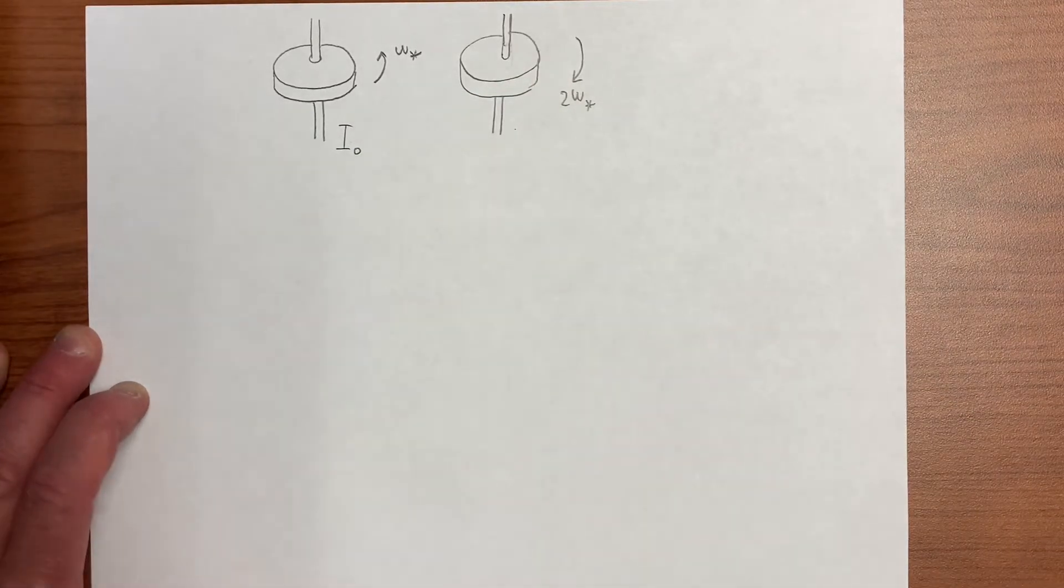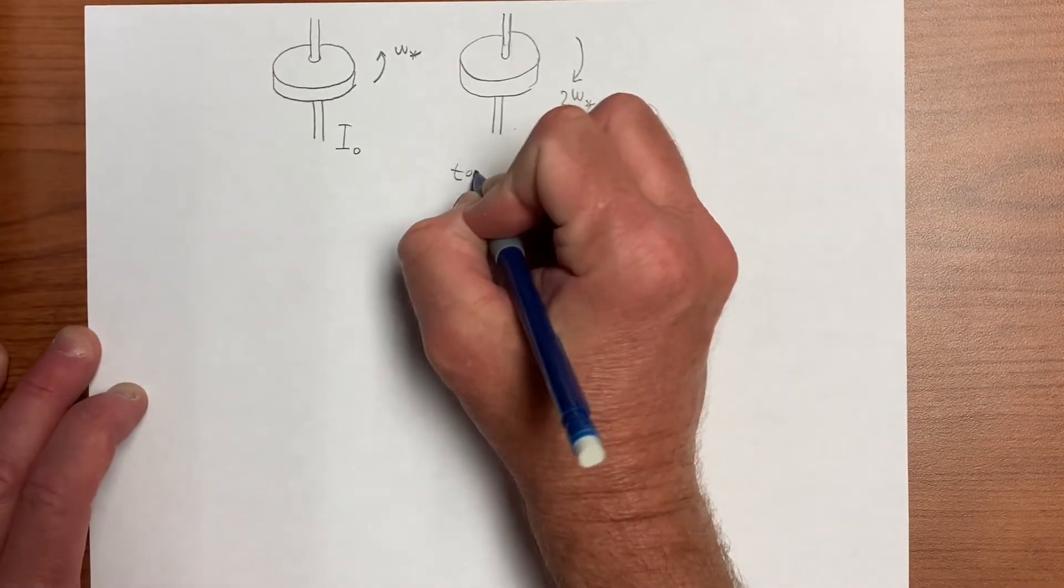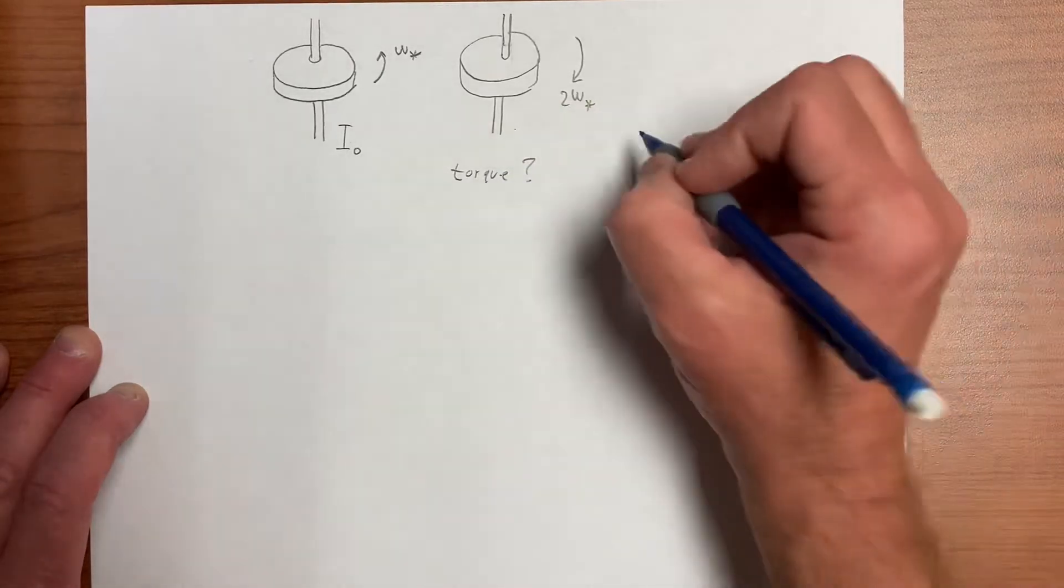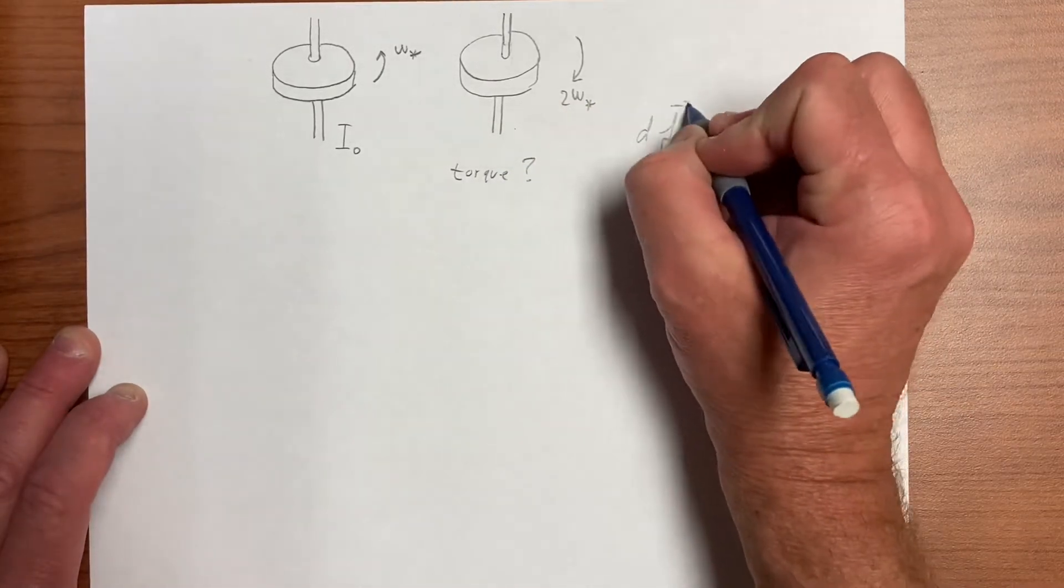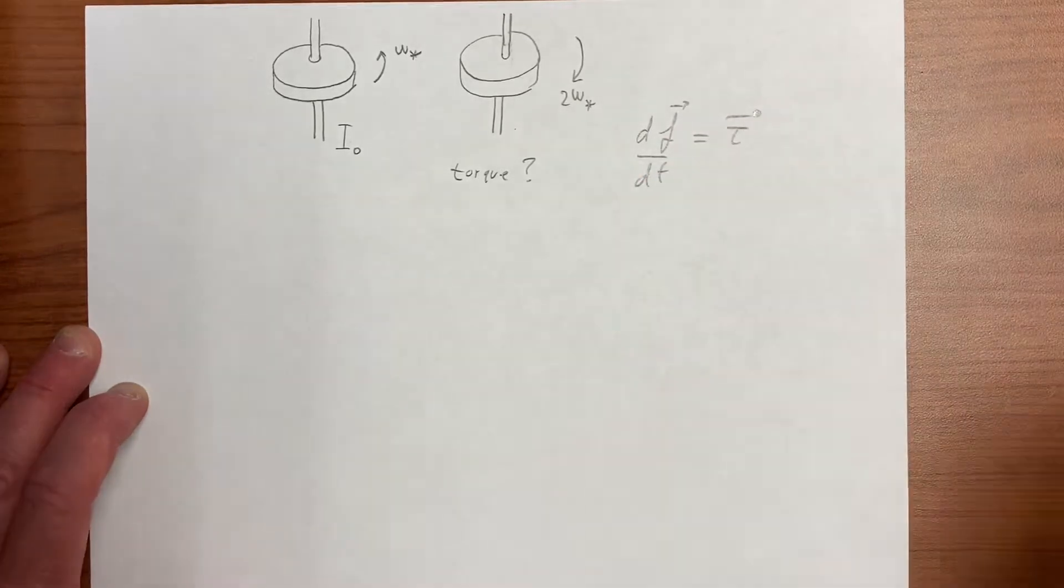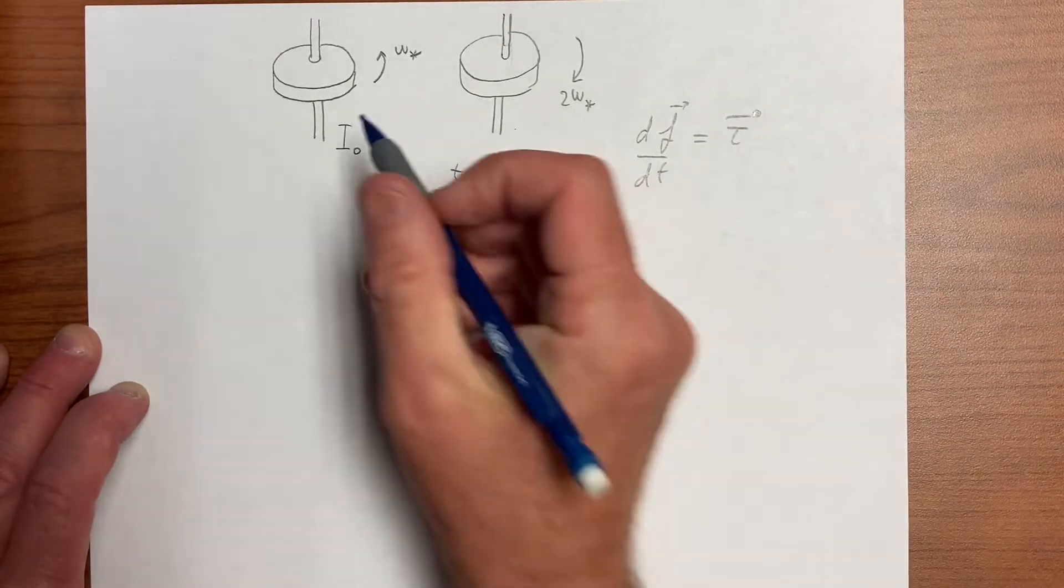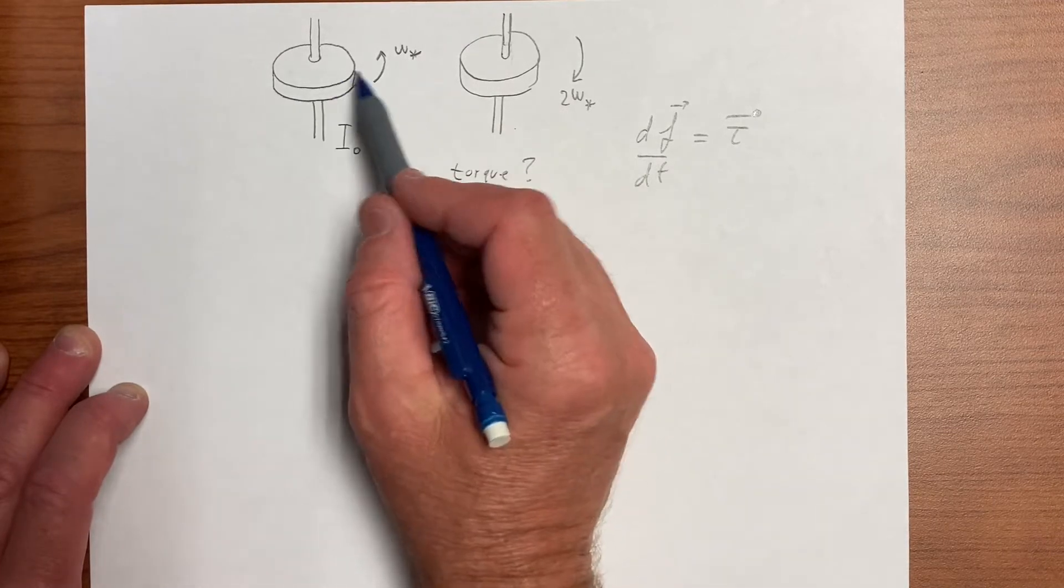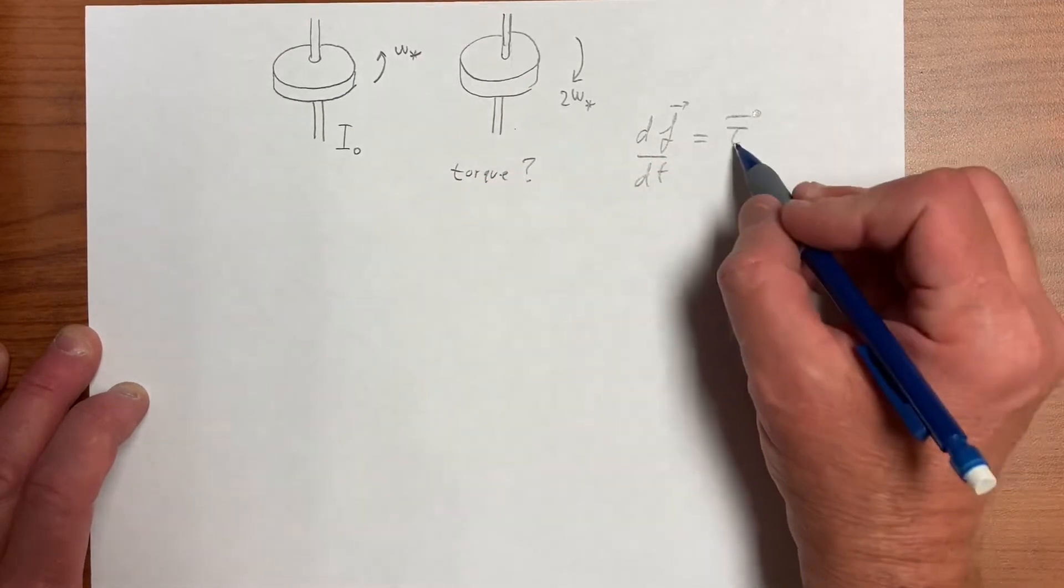And we want to know whether there was a torque, so let's ask if there was a torque. The relationship here is dL/dt equals torque, so we know that we don't see forces acting on the system, so we can't go through torque directly.